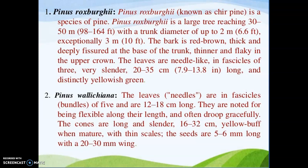The needles are present in fascicles of three, meaning three needles on a single dwarf shoot, up to 22–35 cm long and yellowish-green in color. Similarly, another species is Pinus wallichiana, and like Pinus roxburghii, it is also trifoliate.